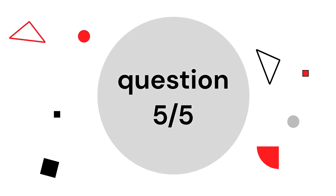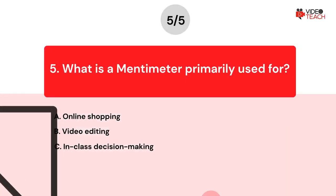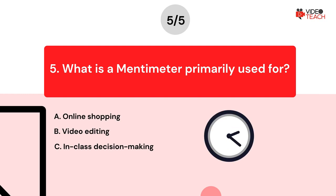Question number five. What is Mentimeter primarily used for? Option A: online shopping. Option B: video editing. Option C: in-class decision making. Now you have about 15 seconds to think about your answer.